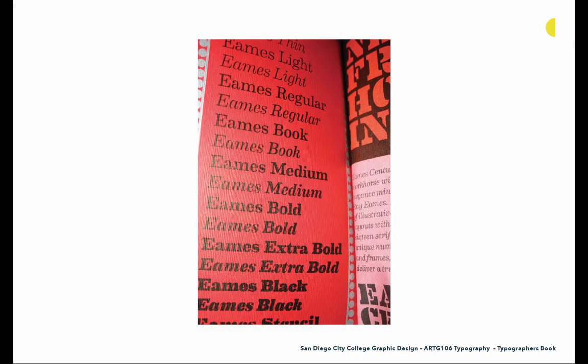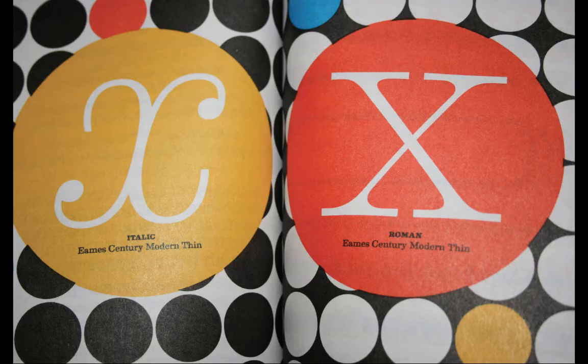Here's a list of all of the weights of Ames — another one of their typefaces. You can see all the different weights build from thin to black. Here's some more of the inside of the Ames specimen with the showcasing of the italic and the roman, and then this really fun Ames-inspired polka dot background. They're a very playful type foundry with a lot of style and history to the work they produce.